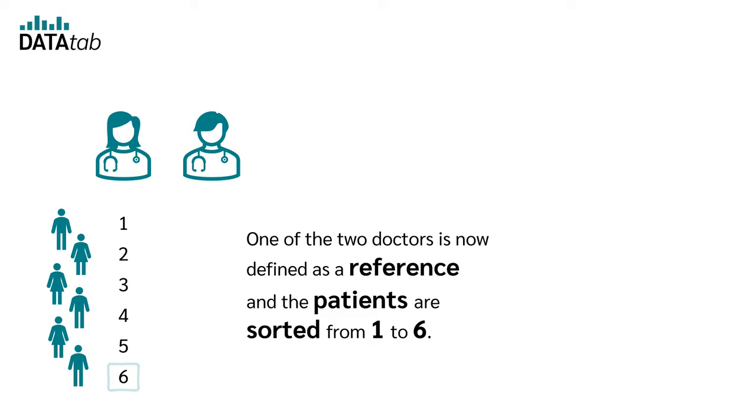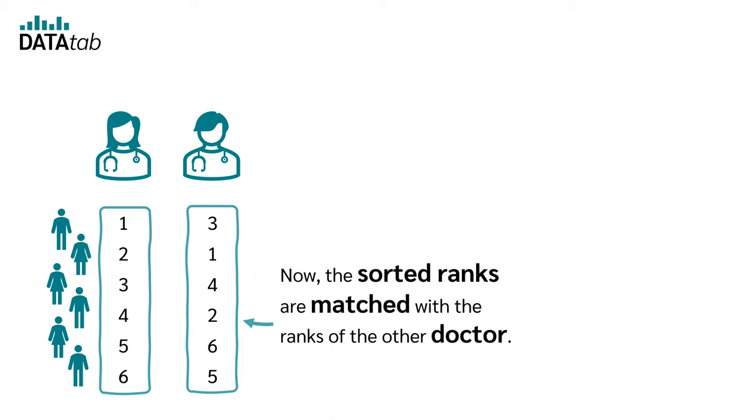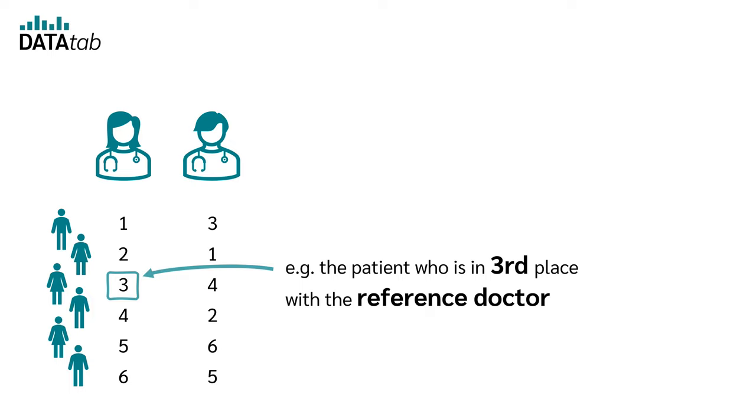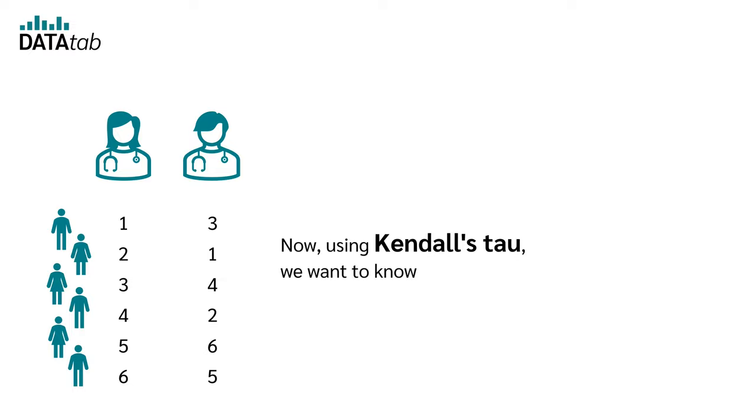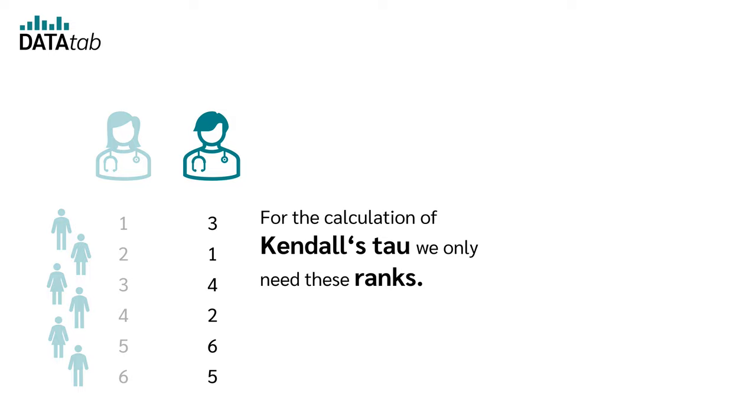Now the sorted ranks are matched with the ranks of the other doctor. For example, the patient who is in third place with the reference doctor is in fourth place with the other doctor. Now using Kendall's Tau we want to know if there is a correlation between the two ratings. For the correlation of Kendall's Tau we only need these ranks.